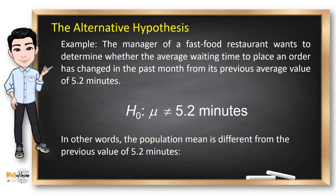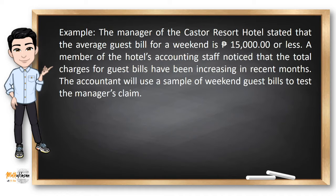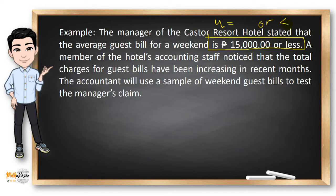There are other ways to write the null and alternative hypothesis. In this example, the manager of the Castor Resort Hotel stated that the average guest bill for the weekend is 15,000 pesos or less. A member of the hotel's accounting staff noticed that the total charges for guest bills have been increasing in recent months. This tells us that the population mean could be equal to or less than 15,000 pesos, and that the population mean is greater than 15,000 pesos.